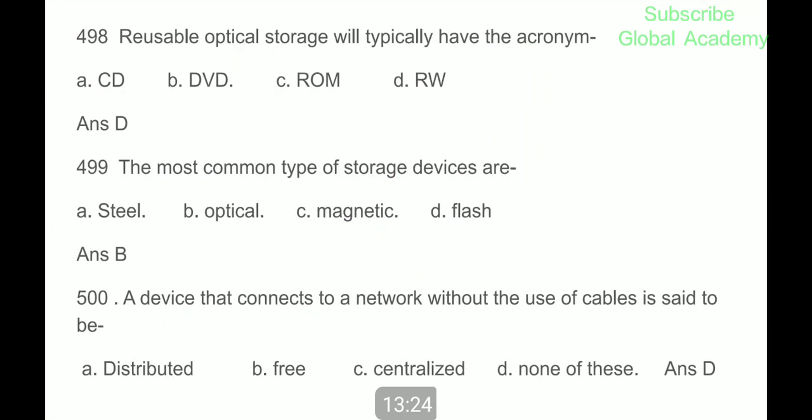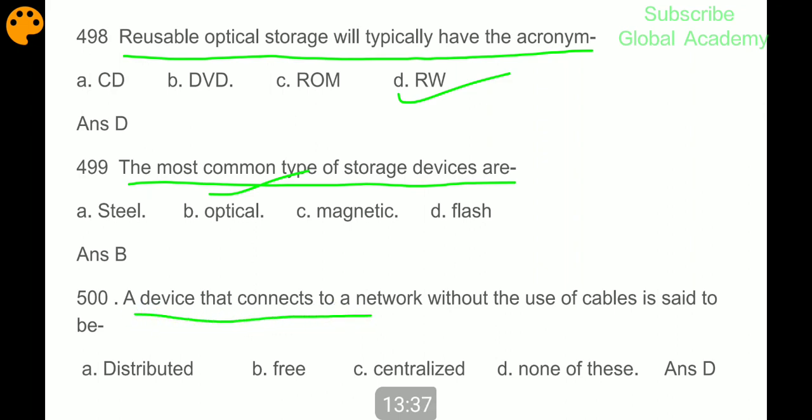Reusable optical storage will typically have the acronym RW. The most common type of storage devices are optical. A device that connects to a network without the use of cables is said to be wireless.